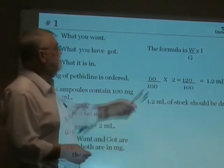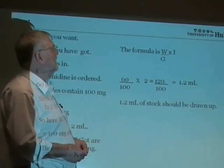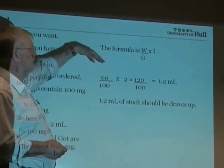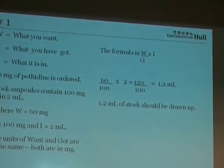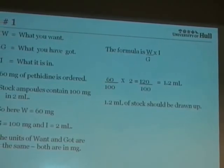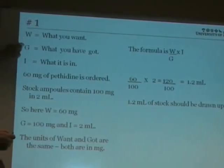The formula that you use to calculate it is this one here. It's want over got times in. You can't get this in the wrong order because it's exactly the same order as you've got here that you've written down. The want is above the got.